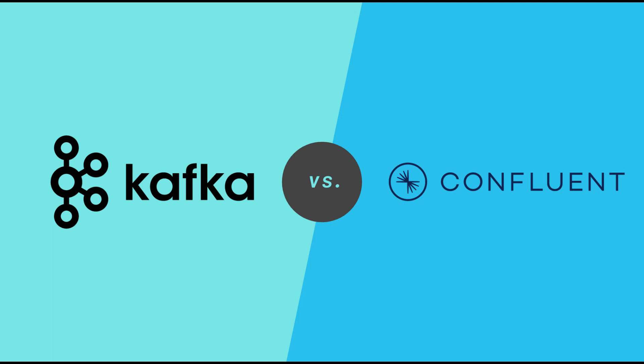Apache Kafka and Confluent Kafka are related but distinct concepts in the world of data streaming and event processing. Here's a breakdown of the differences between the two.